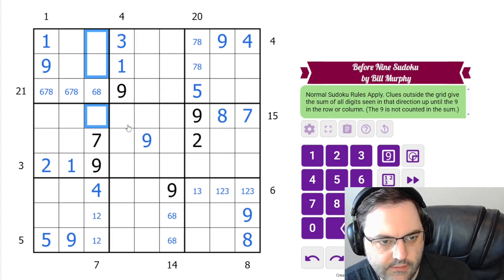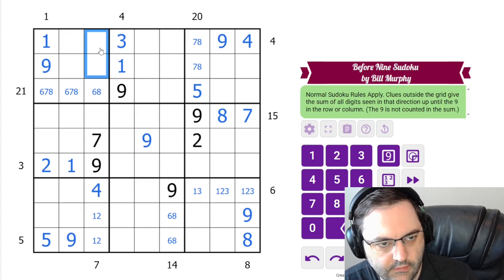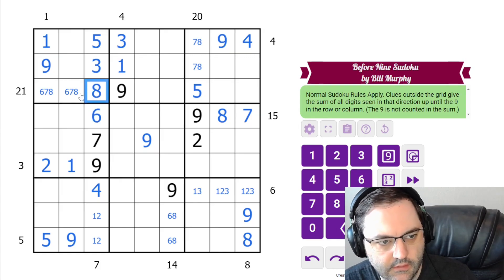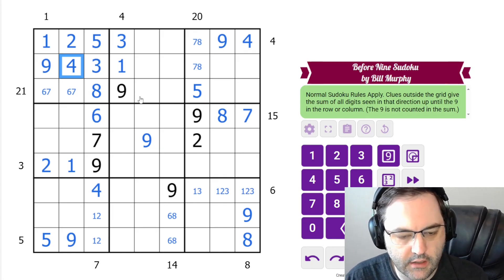We still need 3, 5, 6, 8. That's not very exciting. These can't be 6 to 8, though, because of the 6, 7, 8. So actually, these are 3 and 5, and this is 6. So it was more exciting than I thought it was at first. 2, 4 to finish the box.